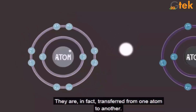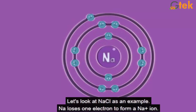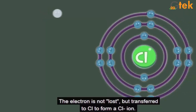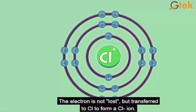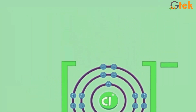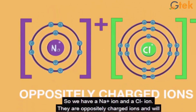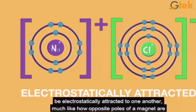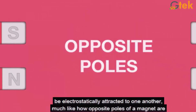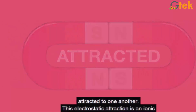An electron from one atom transfers to another atom to form a compound. You can see sodium has one electron. That electron is not lost but transferred to chlorine to form a chloride ion with a negative charge. So we have Na⁺ and Cl⁻, which forms sodium chloride. They are oppositely charged and electrostatically attracted — the same way opposite poles attract each other in a magnet.